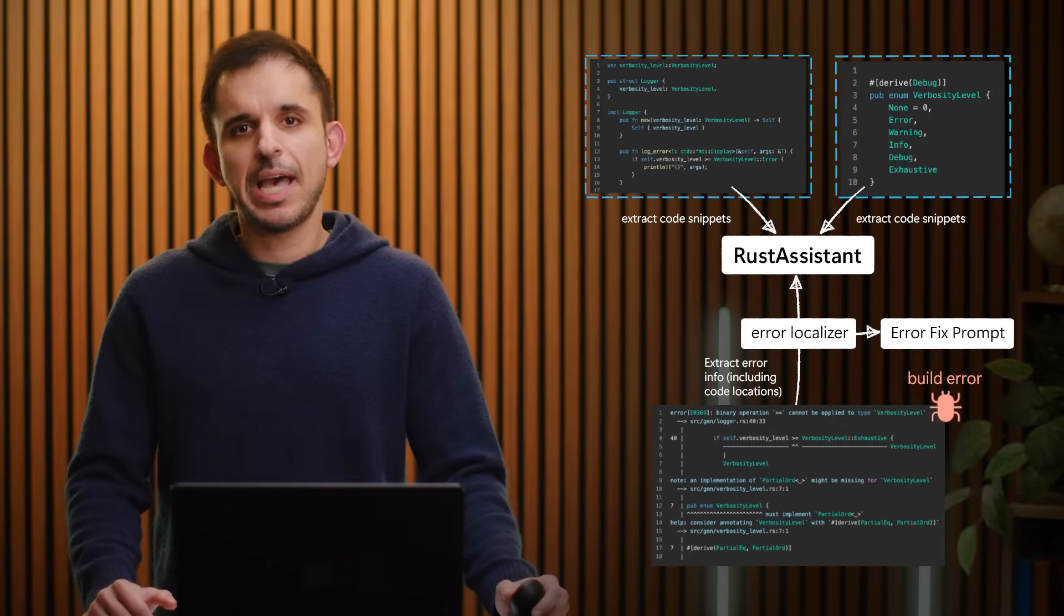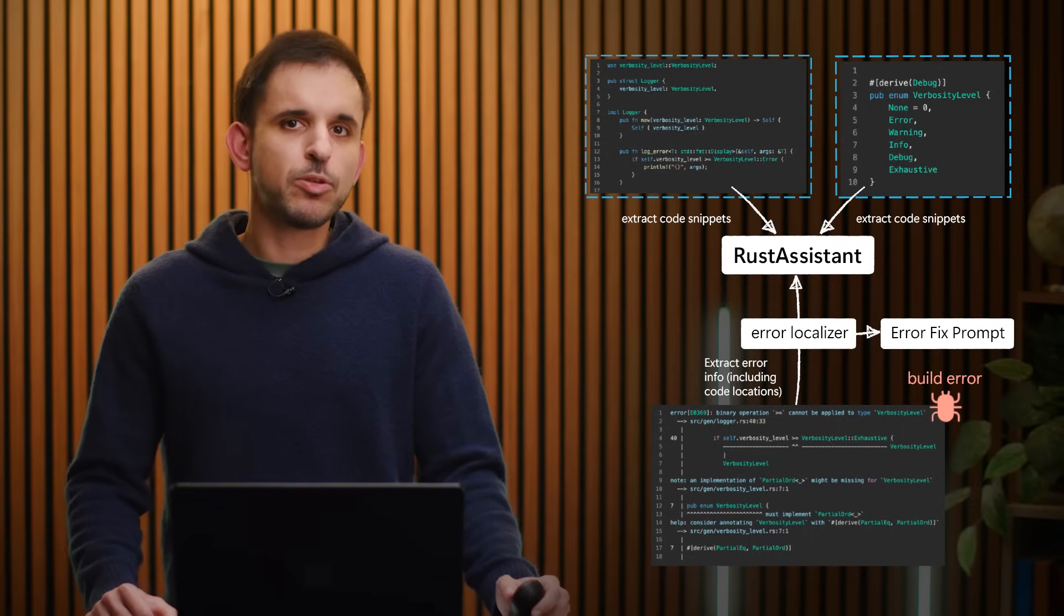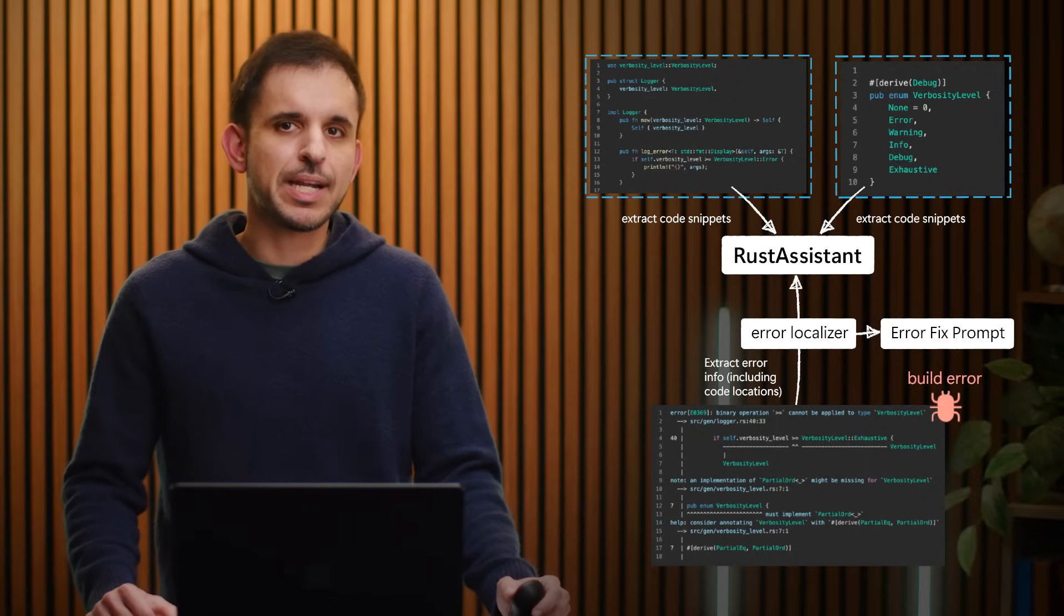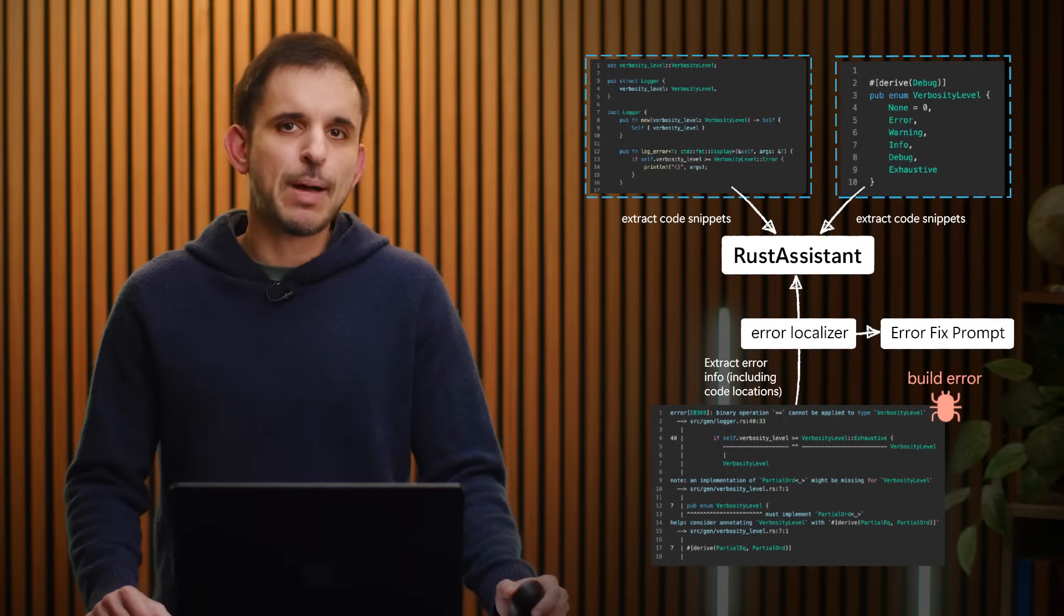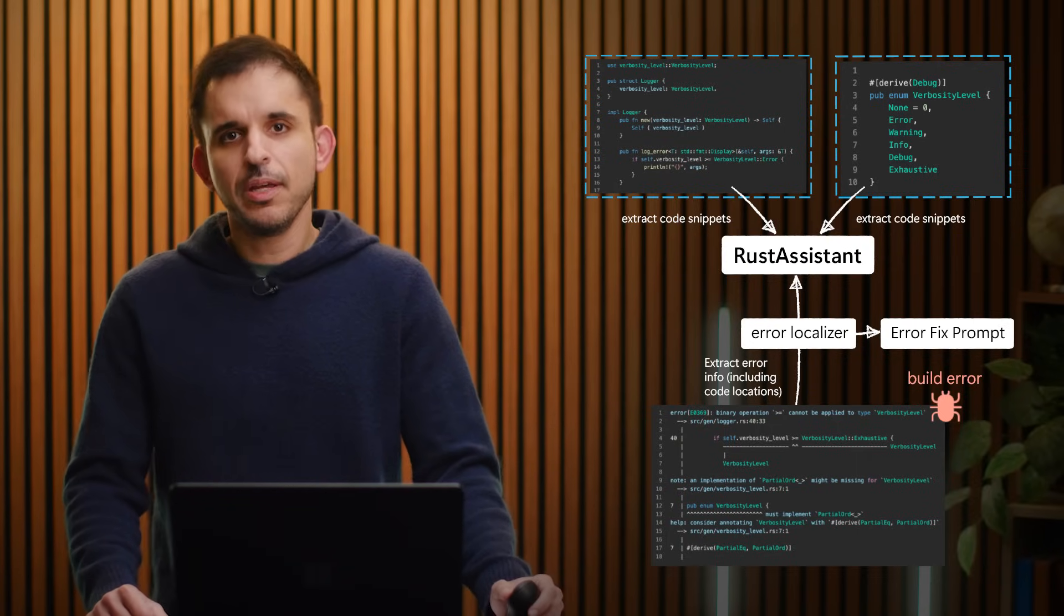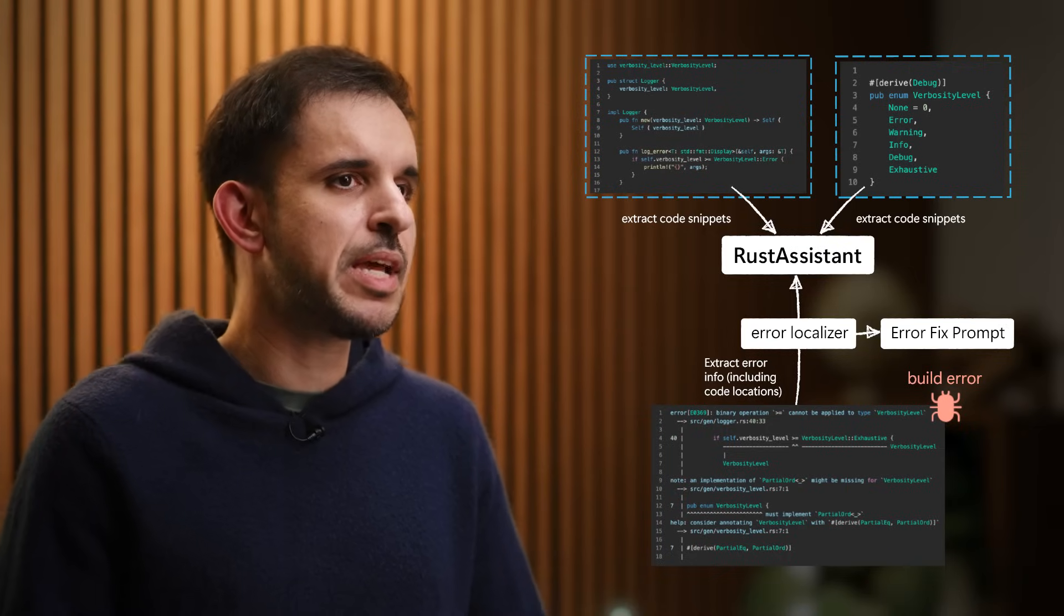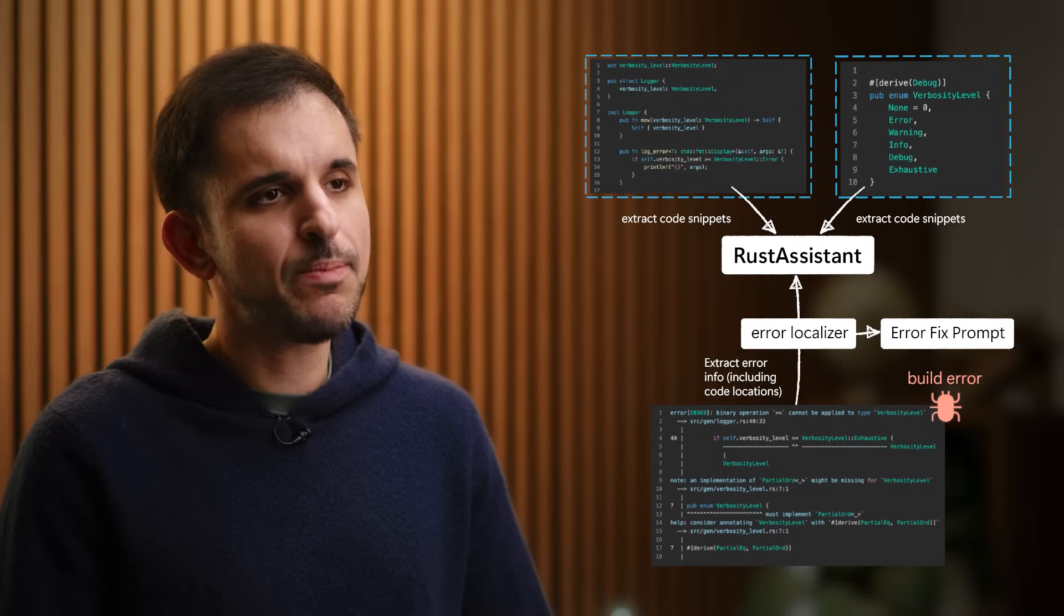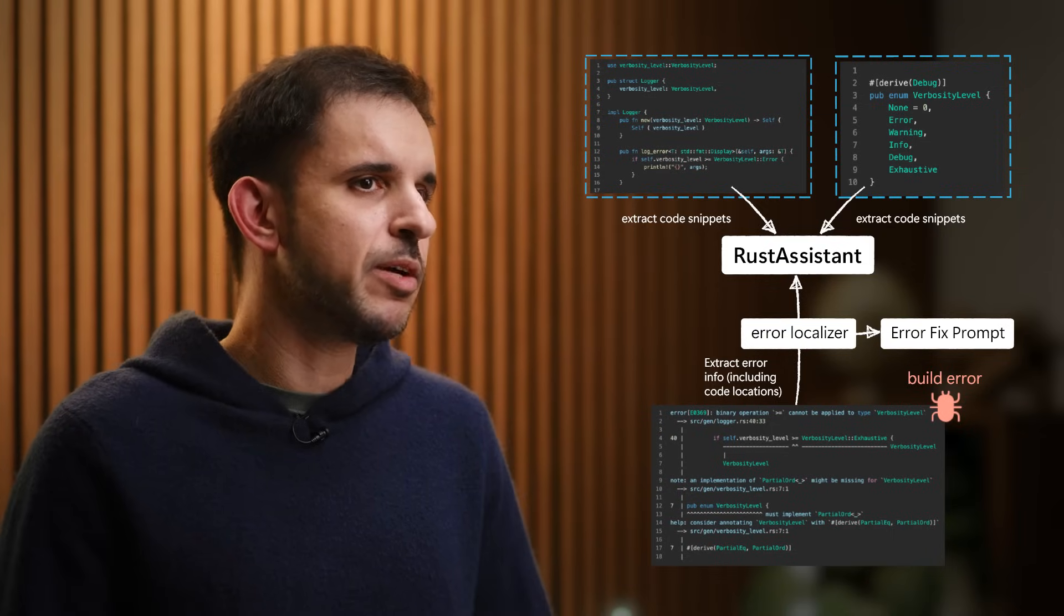At the next step, Rust Assistant takes this detailed error information that is generated in the previous step and focuses on extracting the specific parts of the code that are directly relevant to this error. Looking at the example on the screen, the code snippets related to the enumeration and its use in the logError function are automatically extracted by our tool. This includes not only the problematic line of code, but also other code snippets that provide necessary context for understanding and resolving the error. The tool also captures the error details such as the error code and the accompanying compiler suggestion about the missing trait for performing the comparison. These extracted code snippets and error details are then packaged into a prompt for the LLM. This ensures that the LLM receives only the essential information required to suggest an accurate fix without being overwhelmed by irrelevant parts of the code base. This careful localization step is crucial for both efficiency and accuracy, especially when dealing with very large code bases.